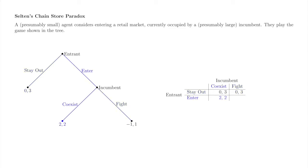Suppose the entrant plays enter and the incumbent plays coexist. The induced path of play is that the entrant enters, the incumbent coexists, and the game ends. Payoffs are 2 to the entrant and 2 to the incumbent.